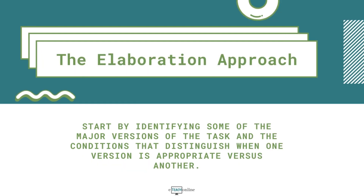When elaborating a whole task, it may be helpful to start by identifying some of the major versions of the task and the conditions that distinguish when one version is appropriate versus another. Thinking of different conditions helps to identify versions, and thinking of different versions helps to identify conditions — so it is wise to do both simultaneously or alternately. Ask the subject matter expert to recall the simplest case of the whole task they have ever seen. The simplest version will be a class of similar cases; then check to see how representative it is of the task as a whole. There is no single right version to choose — it's usually a matter of trade-offs. You may also want to use criteria such as how commonly performed the version is and how much risk there is to the learner or equipment.